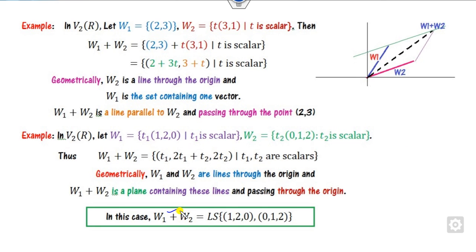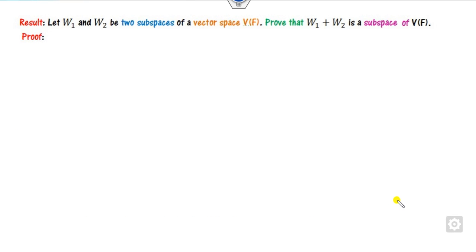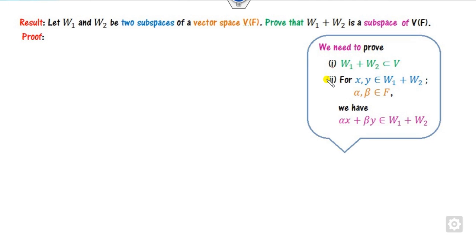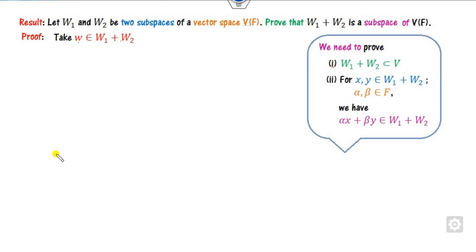We can also write this as LS, the linear span, as discussed in our last lecture. We will also see that the linear sum is a subspace of the vector space. To prove it is a subspace, we must prove two properties: first that it is a subset, and second the linear combination property. We can take w from the linear sum and prove it belongs to v.